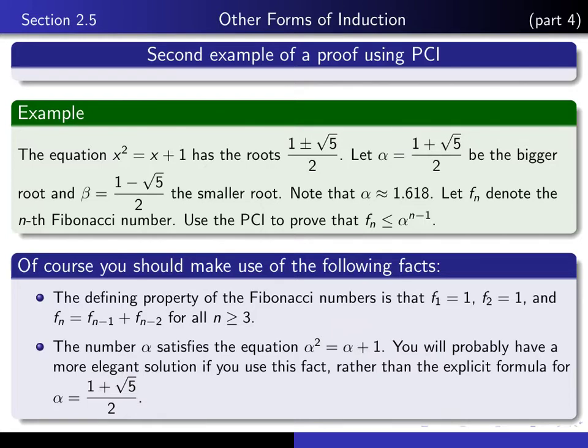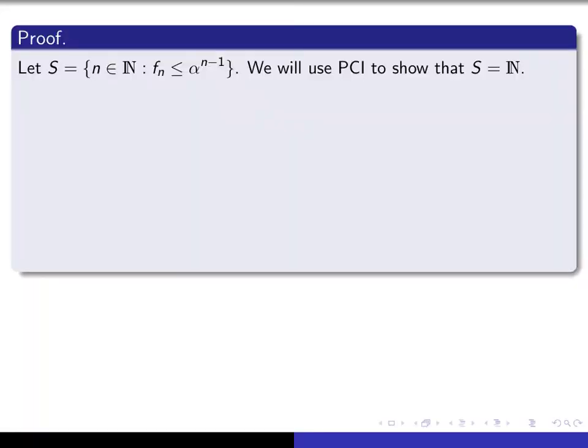So I'd like you to put your video on pause for a moment and write down at least the first couple of sentences of the proof, the one where you introduce the appropriate set S and you indicate what it is you're intending to do in the proof. Well, this is what I had in mind. You should start the proof by telling me that your set S is the set of all natural numbers such that F sub n is less than or equal to alpha to the n minus 1 and that you're going to use the principle of complete induction to prove that S is equal to all of the natural numbers.